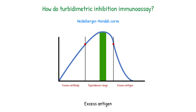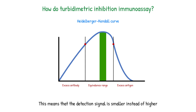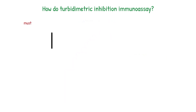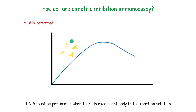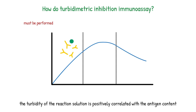Stage three is excess antigen: when there is more antigen than antibody in the reaction cup, there is not enough antibody to bind all the antigens, so the solubility of the immune complex increases again. This means that the detection signal is smaller instead of higher, indicating a lower result instead of a higher one — this is also called the hook effect. Therefore, TINIA must be performed when there is an excess antibody in the reaction solution, at which point the turbidity of the solution is positively correlated with the antigen content.